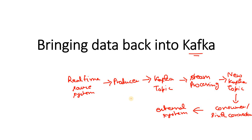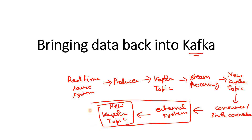This is the general flow. Now sometimes we might face a situation where after dumping the data in an external system from our Kafka cluster, we might need to send the data from the external system back to Kafka again. Sometime we might face this kind of requirement — bringing the data back into Kafka that we earlier sent from Kafka to that external system.